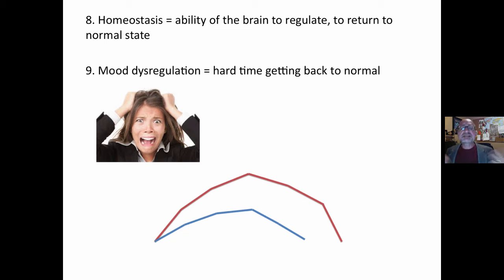Homeostasis is the ability of the brain to regulate, to return to a normal state. You feel anger or surprise or sadness, but then your brain is able to bring yourself back.